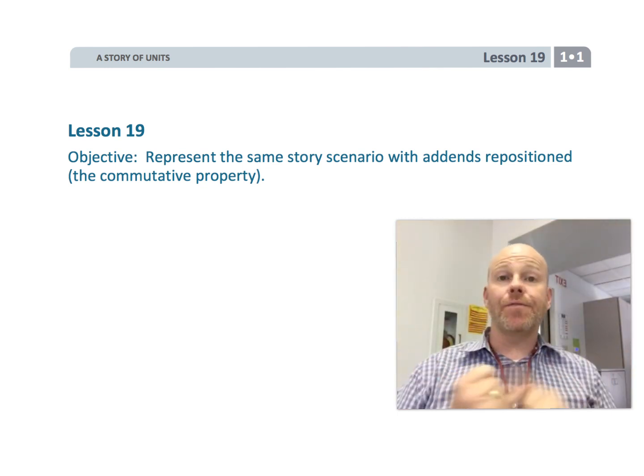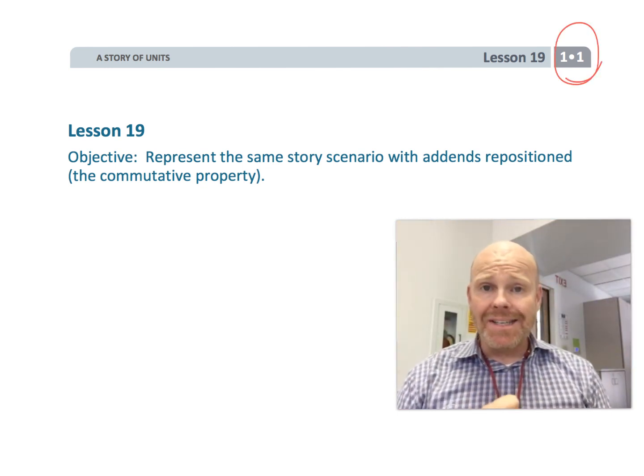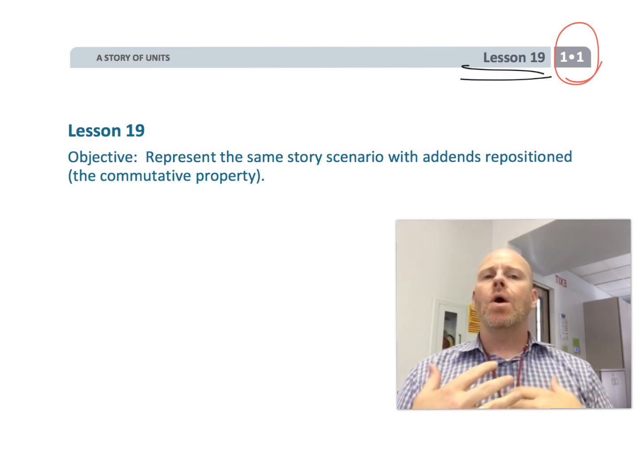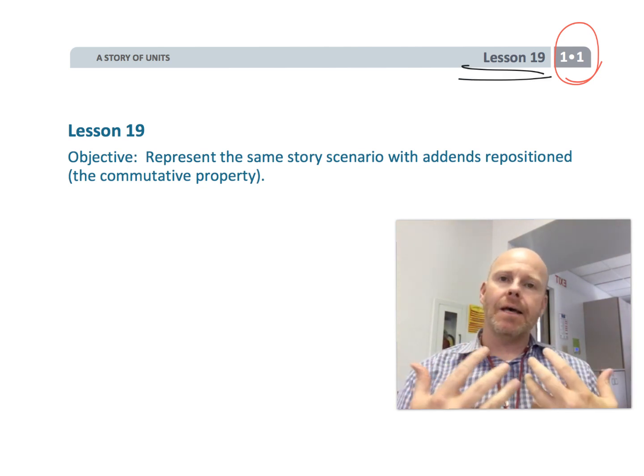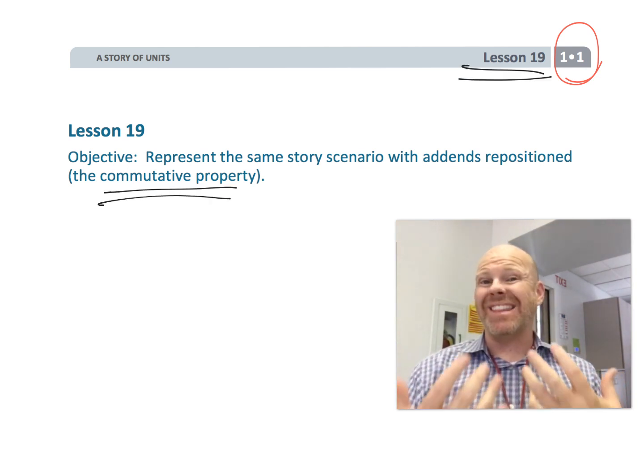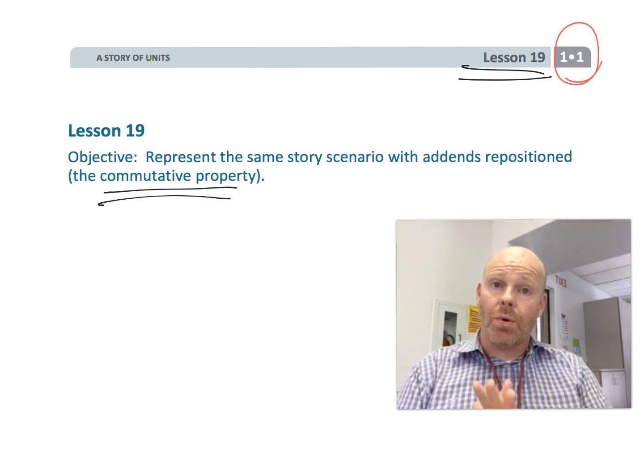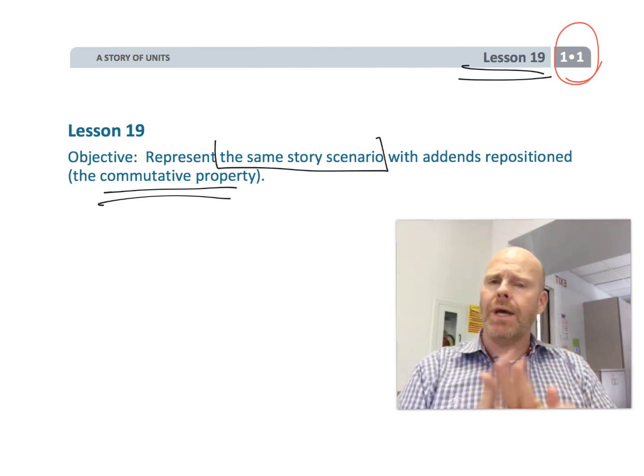This is first grade, module 1, lesson 19, and in this lesson, we're going to begin that concept of commutative property. The idea being the same story can be represented in two different ways.